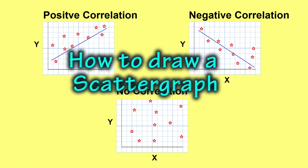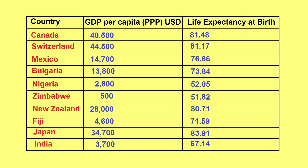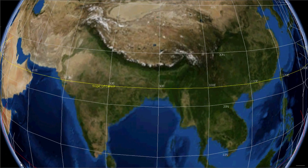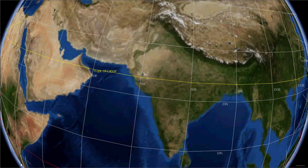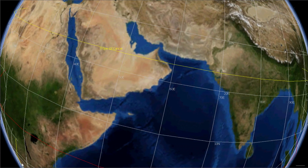Scatter graphs show the relationship between two sets of variables. Today I want to make a scatter graph showing the relationship between GDP per capita and average life expectancy. I have GDP and life expectancy data for 10 countries. Note that scatter graphs are better suited when you have data for many countries, as they are not so effective if you only have data for a small number of countries.